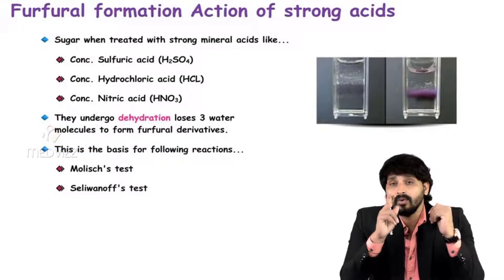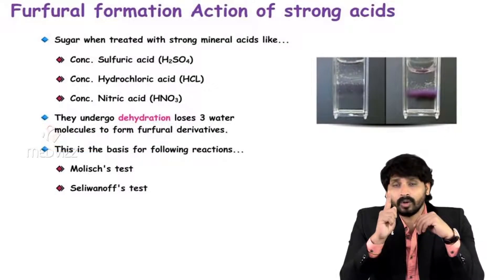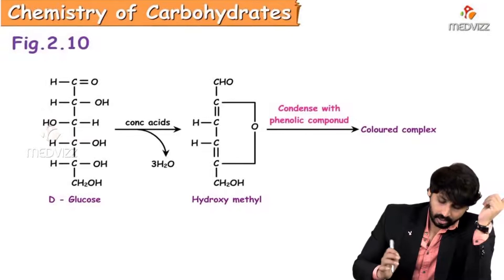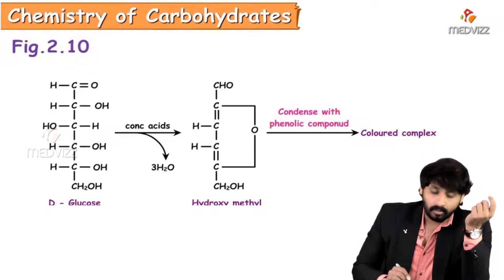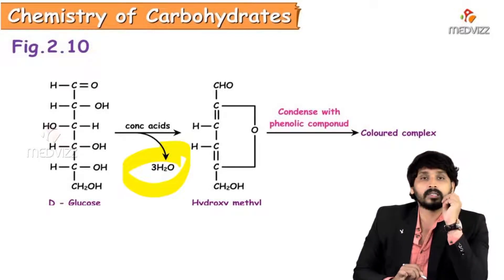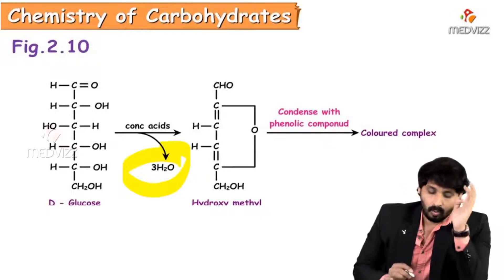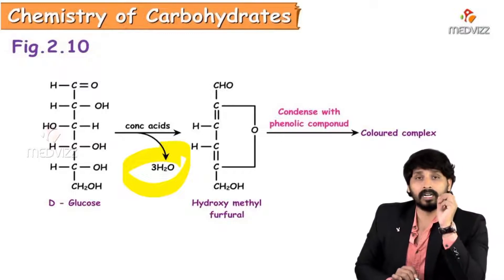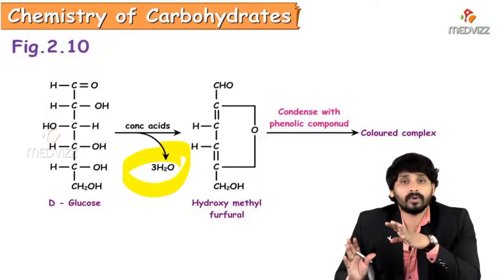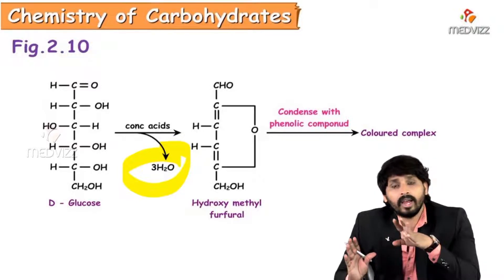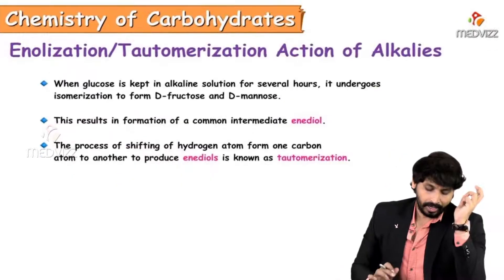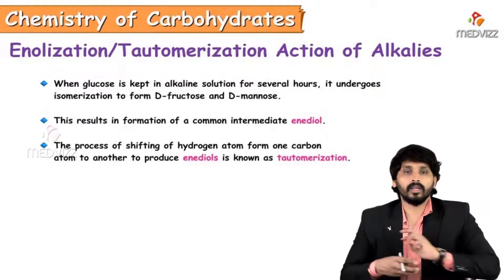Whenever furfural is formed, you get a purple-colored ring. Dehydration removes all the hydroxyl groups as water molecules — all the OH groups and hydrogens are removed. When glucose is treated with concentrated acids, it forms hydroxymethyl furfural, which then condenses with phenolic compounds to form a colored complex — that purple-colored ring.